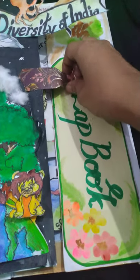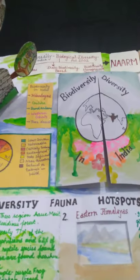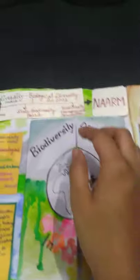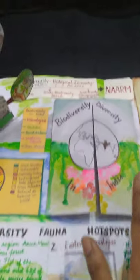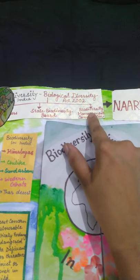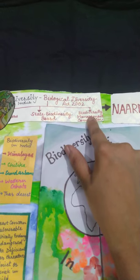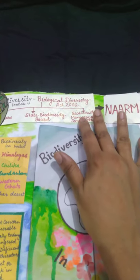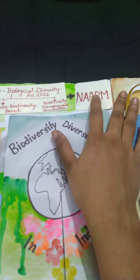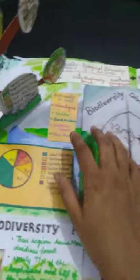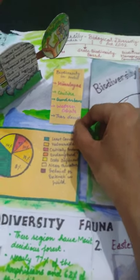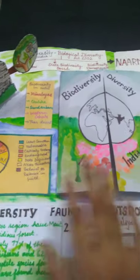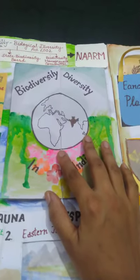There's a small hook kind of thing that I've pasted here. This lab book gives us all the information on biological diversity of India. This page covers the Biological Diversity Act of 2002 — what things are mentioned in this act, what it is called as a short form, and the different kinds of diversity found in India and about their distribution.